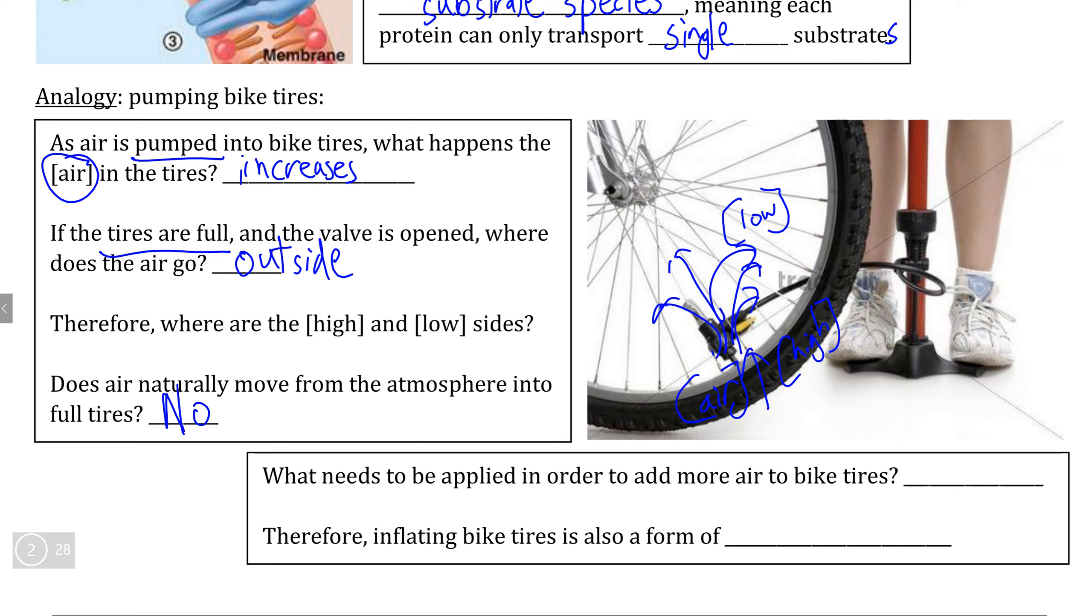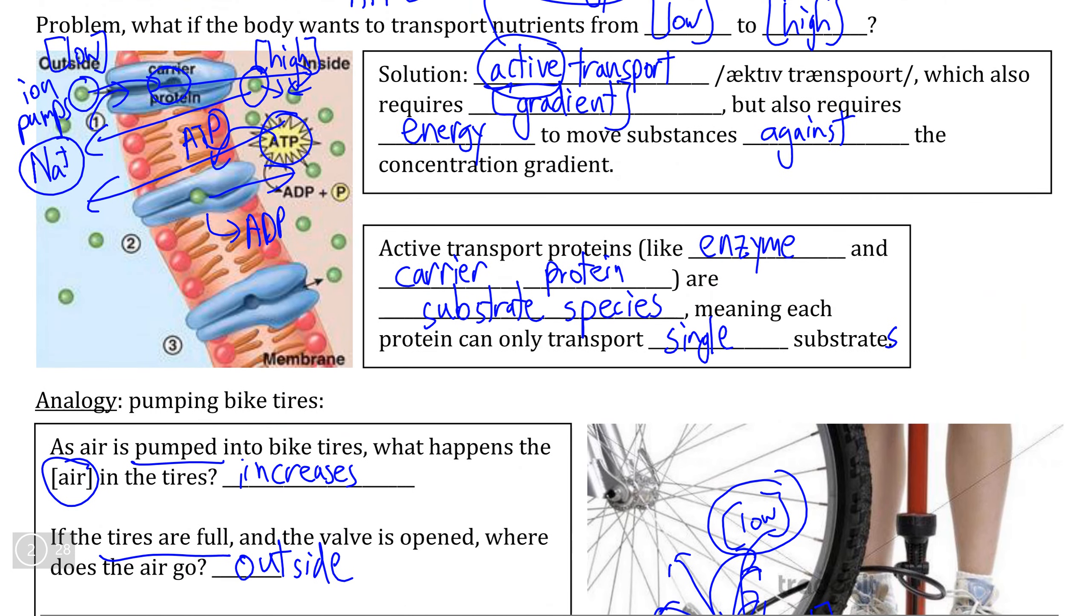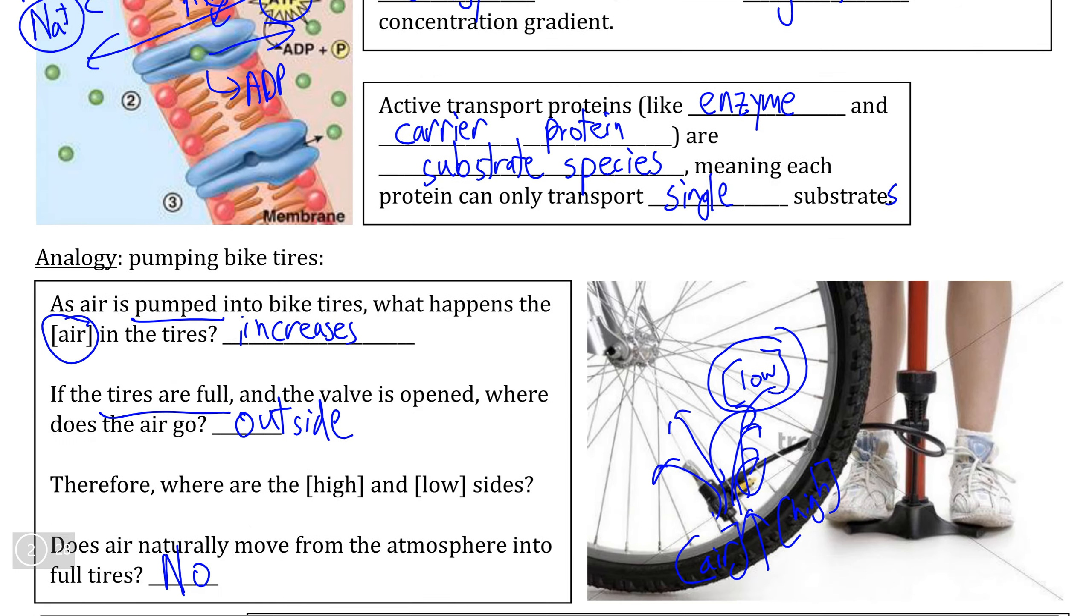Now, if you want to get air from a lower concentration into your tires at a higher concentration, we need to actually pump air from the atmosphere into your tires, meaning that we need to apply energy in order to get air from the atmosphere to flow into an area of higher concentration inside of the tires. And for this reason, in addition to the active transport process of moving ions or nutrients from low concentration to high concentration, pumping your bike tires is also a form of active transport, the only difference being the energy source.